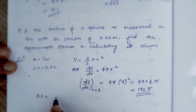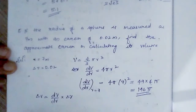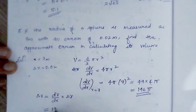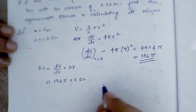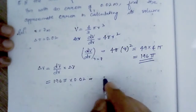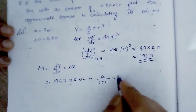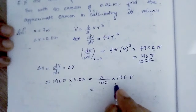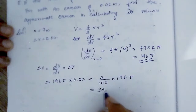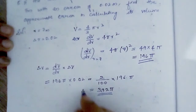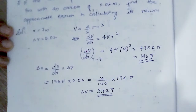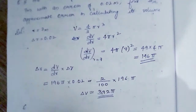Delta v equals dv by dr into delta r, which is 196 pi into 0.02. This equals 2 by 100 into 196 pi, giving 392 by 100, which is 3.92 pi. This is the approximate error in finding the value of the volume.